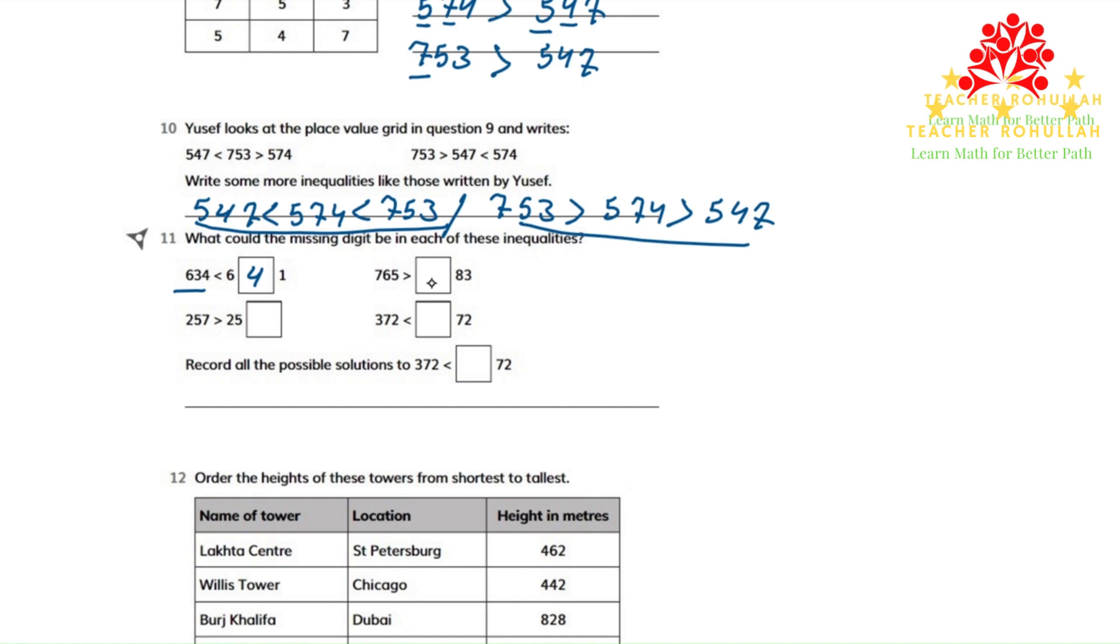In the second one, we are missing a number in the hundreds place. So the number to the left is 765, which is greater than the number to the right. So the number to the right should be 683. Because here in the hundreds place we have 7, and here we should have a number less than 7, which is 6.